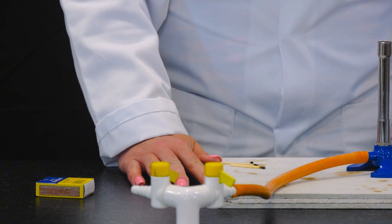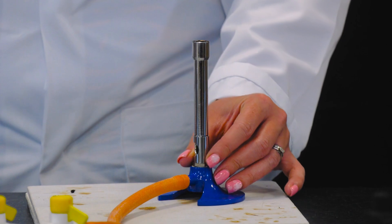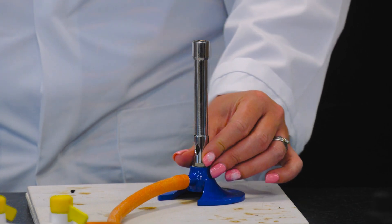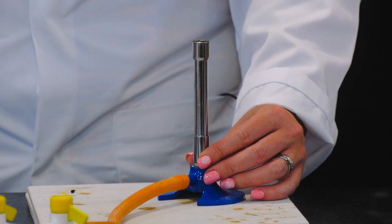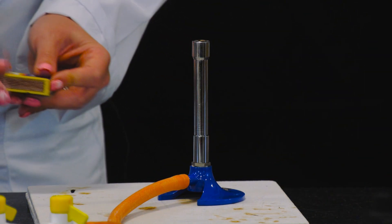Before lighting the Bunsen burner, ensure the air hole is closed by turning the collar. This will produce a yellow safety flame, which is easier to see.